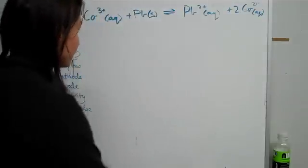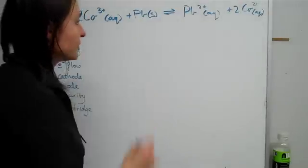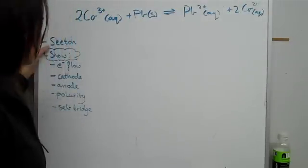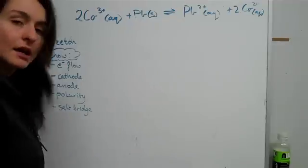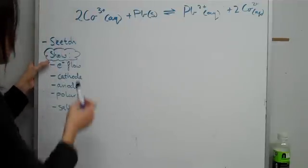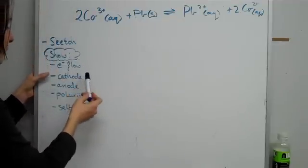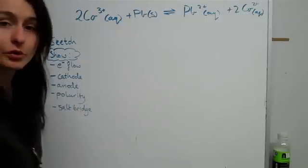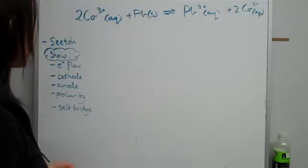Basically what I've done is I've written up an equation and the question is to firstly sketch a galvanic cell setup, then show the electron flow, which one's a cathode, the anode, the polarity as well as the salt bridge. So let us get started.